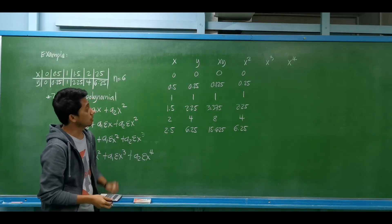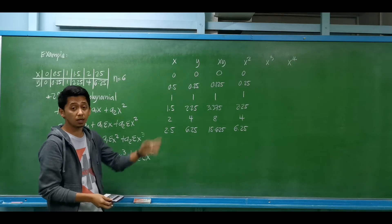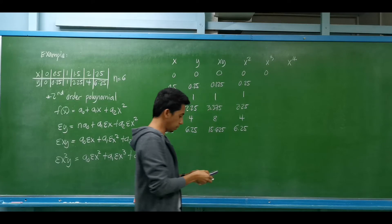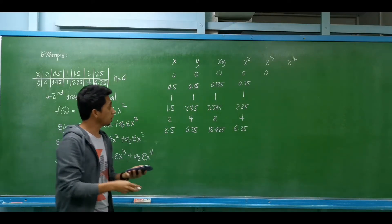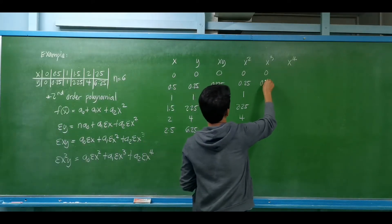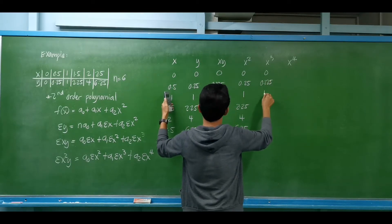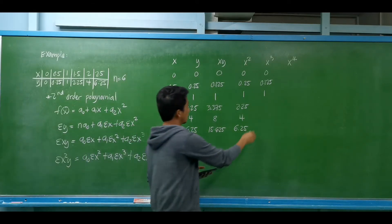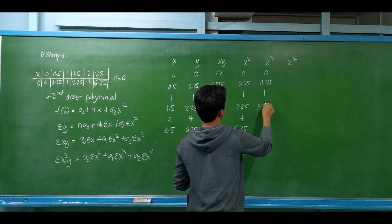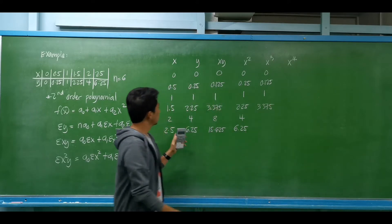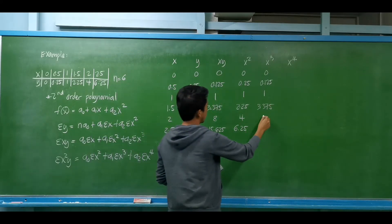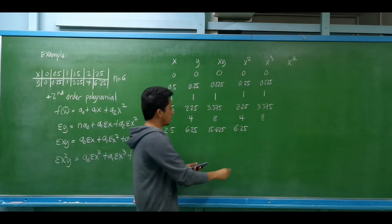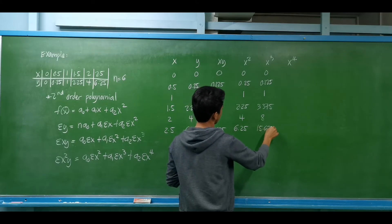For x cubed: 0³ = 0; 0.5³ = 0.125; 1³ = 1; 1.5³ = 3.375; 2³ = 8; and 2.5³ = 15.625.